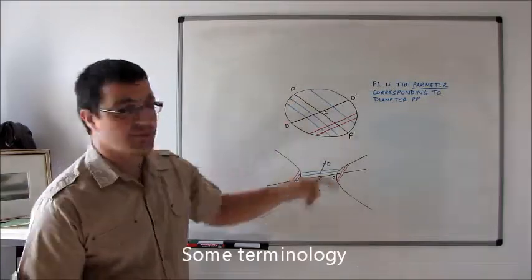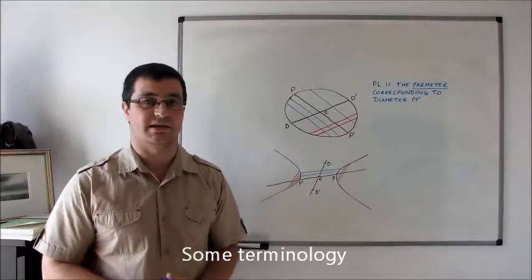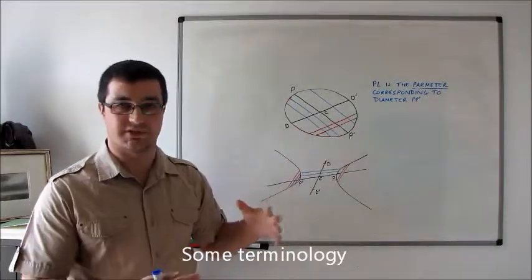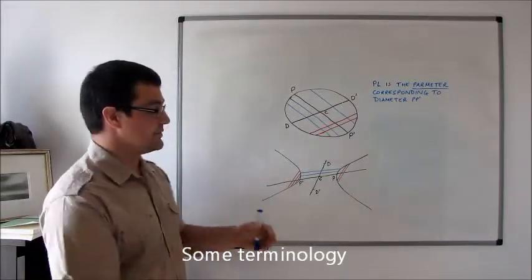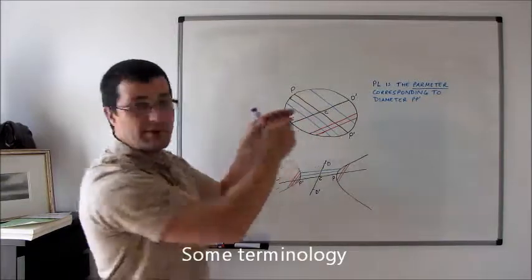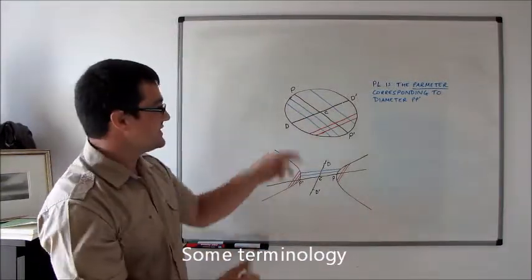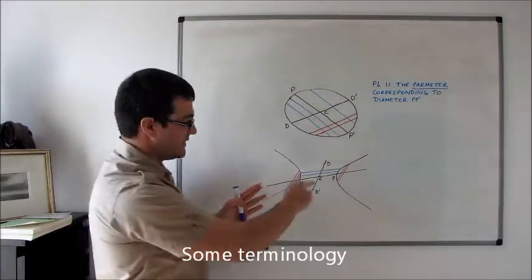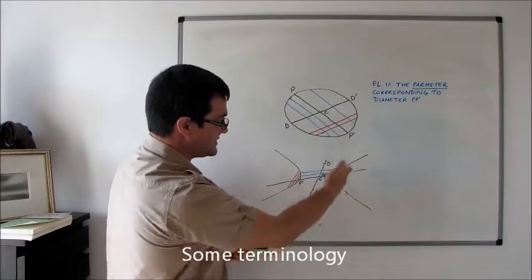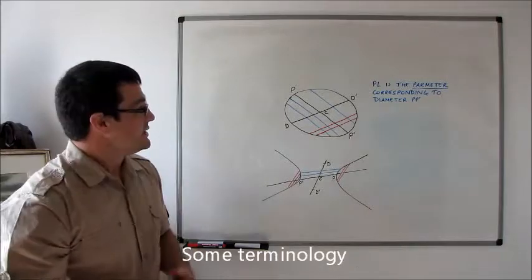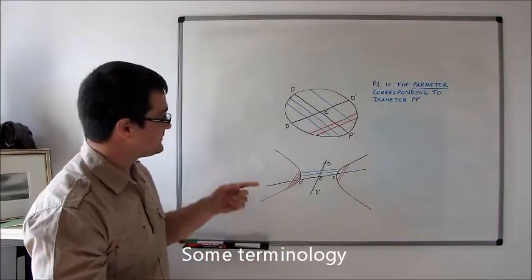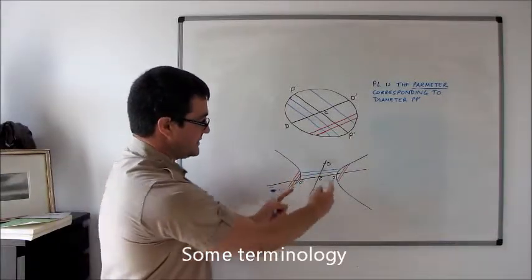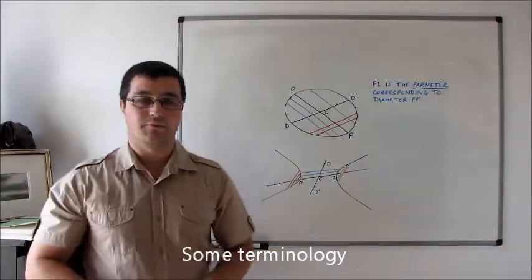In each case we've got PP', which is a transverse diameter — I mentioned transverse diameters in the previous video. Regarding the transverse diameter, sometimes we say the diameter PP' referring to the whole line extended indefinitely in both directions. In the case of the ellipse there's not much point doing that, because there are no chords outside the ellipse for it to bisect. But in the case of the hyperbola it definitely makes sense, because the chords it bisects are in the two branches. When we talk about the transverse diameter PP' we mean the finite section: in the ellipse it's the interior segment, and in the hyperbola it's the segment between the two branches.